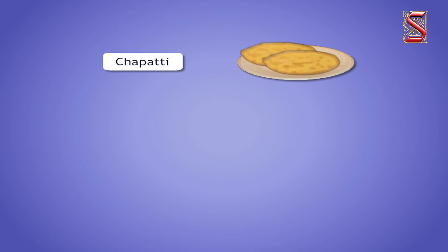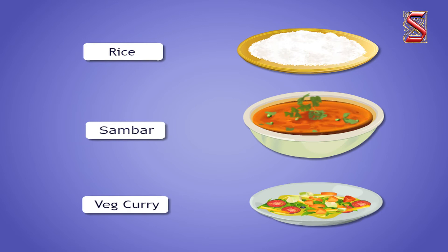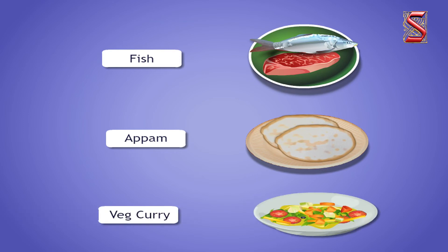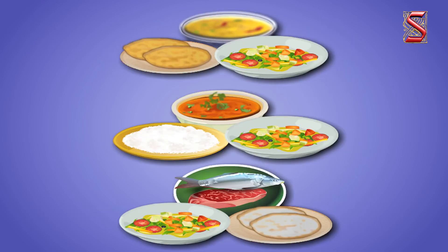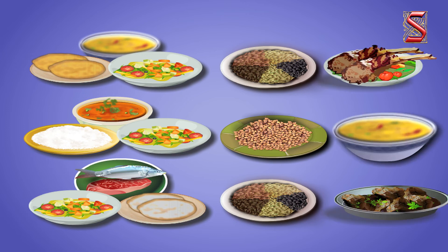What did you have for dinner yesterday? Chapati, dal, and mixed vegetable curry? Or did you have rice, sambar, and vegetable curry? Or maybe you had fish curry and a vegetable curry? You must have had any of these meals or something similar. If you observe these meals, you will see that one part is any kind of grain, and other parts may be dal, a meat item, or any vegetable. You may also have some supplementary food items like curd, pickles, or buttermilk.